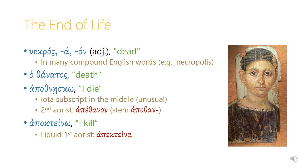The verb apokteno means 'I kill.' You just have to watch that this is a liquid first aorist, so it takes first aorist endings with the alpha connecting vowel, but it doesn't use the sigma tense marker because the end of the stem is a nu — apoktene — and the nu makes the sigma tense marker disappear or absorbs it, so it's apoktena in the first aorist.